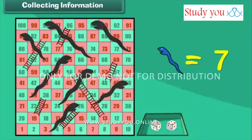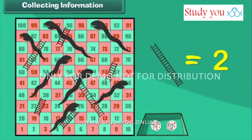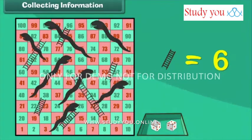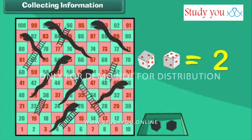Now we count the total number of ladders: 1, 2, 3, 4, 5 and 6. There are 6 ladders. How many dies do you see here? There are 2 dies.